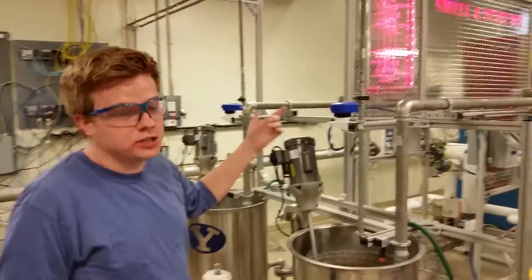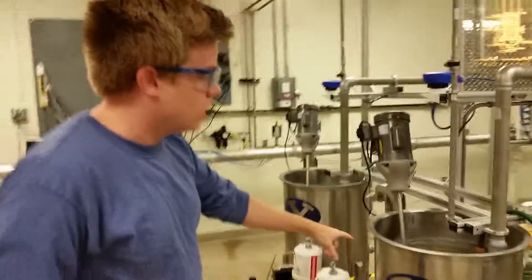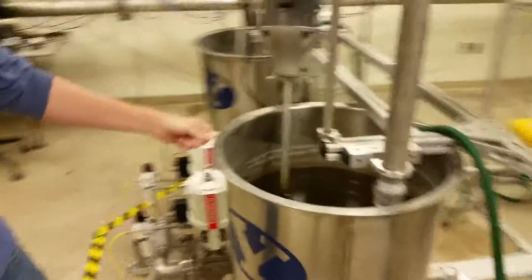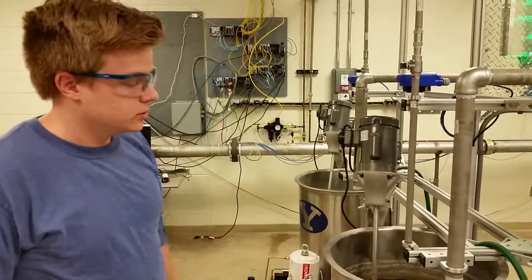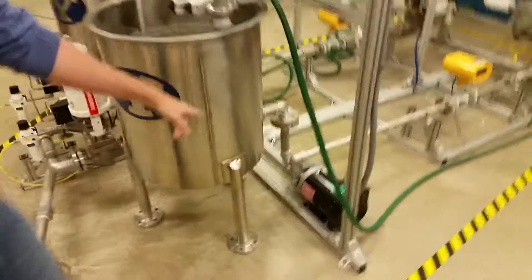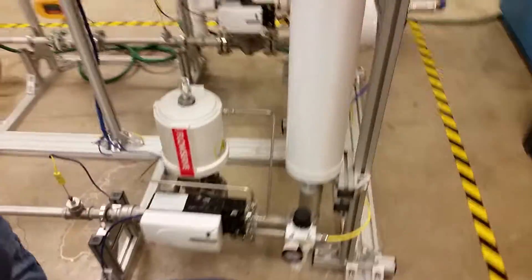So we got a shell and tube heat exchanger here and I'm just gonna run through the parts real quick. You've got your water here and it has both a pipe and a hose to add flow in. The water will then come out and it's going through this pump here, comes through, and we run it through the heat exchanger here.